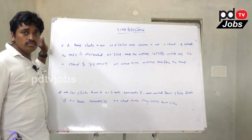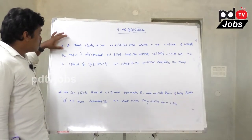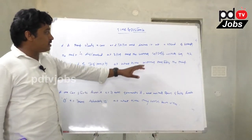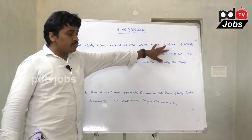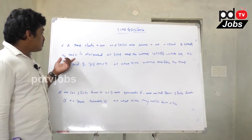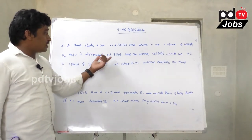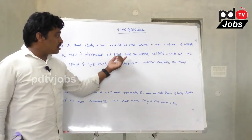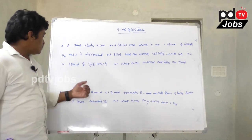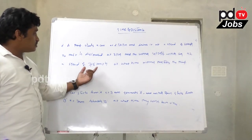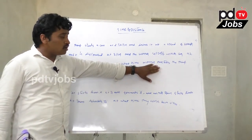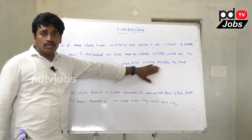Example: A thief steals a car at 2:30 PM and drives it at a speed of 60 kmph. The theft is discovered at 3 PM and the owner sets off in another car at a speed of 75 kmph. At what time does the owner overtake the thief?